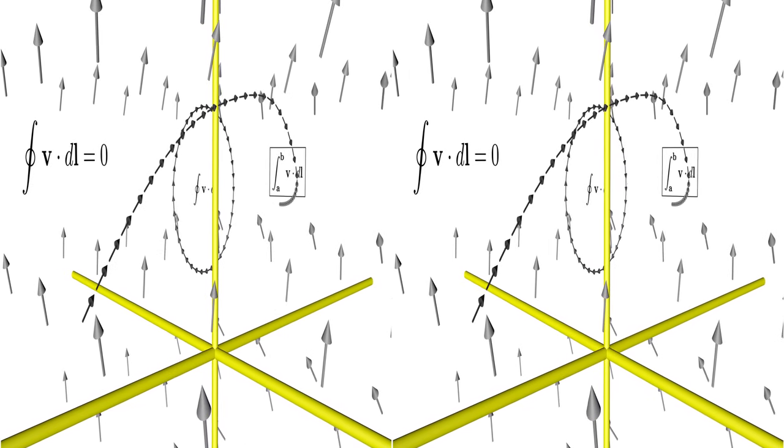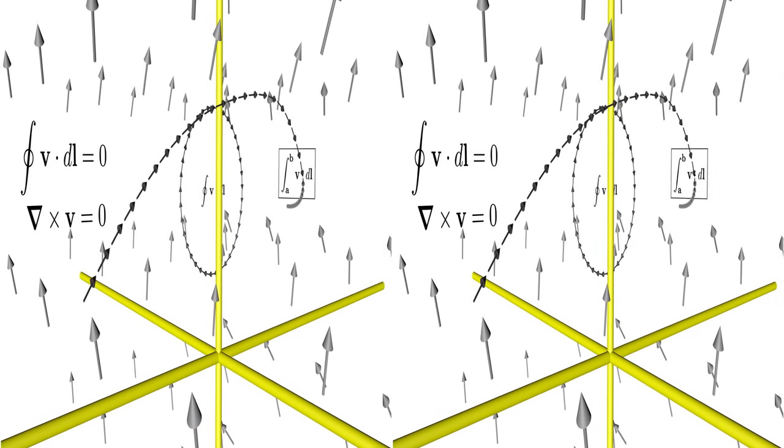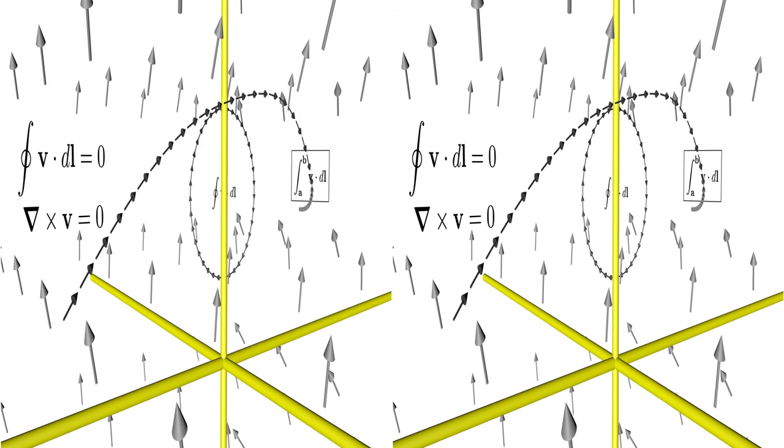These vector fields are called conservative and have the second property that the curl is zero, so they are also irrotational.